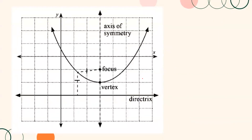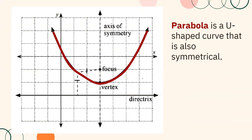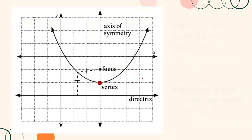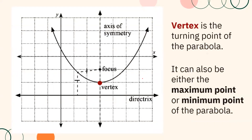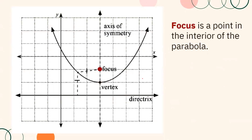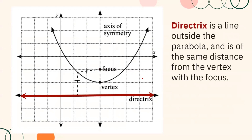Looking back on the graph of a parabola, these are the things that we need to remember. A parabola is a U-shaped curve that is also symmetrical. The vertex is the turning point of the parabola — it can also be either the maximum point or minimum point of the parabola. The focus is a point in the interior of the parabola, also known as the fixed point.